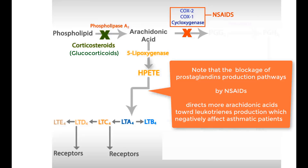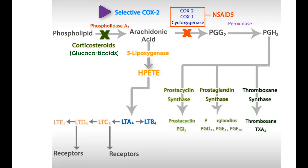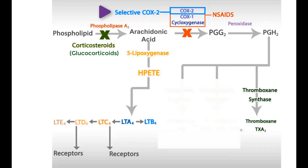It is clinically important to note that the blockage of prostaglandin production pathways by NSAIDs directs more arachidonic acid toward leukotriene production, which negatively affects asthmatic patients. The relatively new selective COX-2 inhibitors have no effect on COX-1, and therefore they don't interfere with thromboxane production.